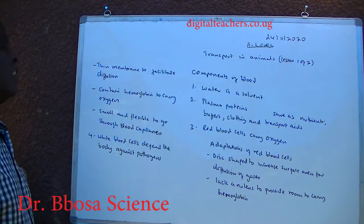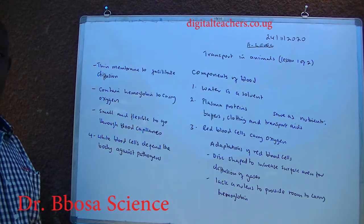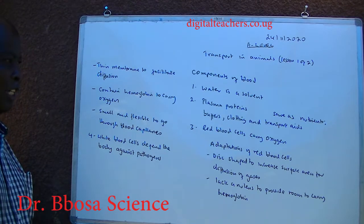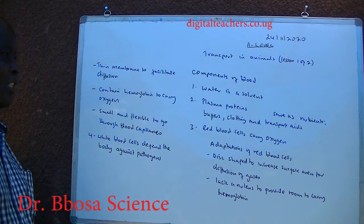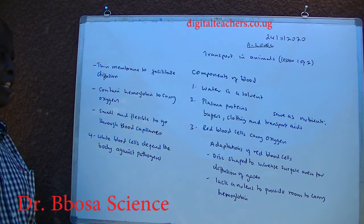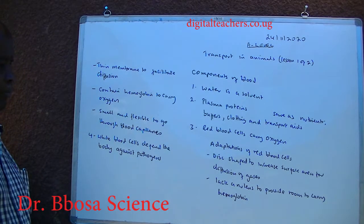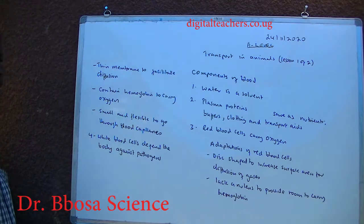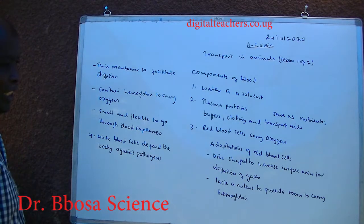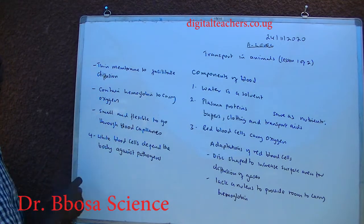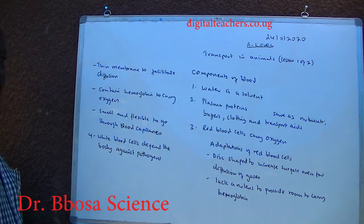Components of blood: 1. water is a solvent. 2. plasma proteins serve as nutrients, buffers for clotting and transport. 3. red blood cells carry oxygen. Adaptations of red blood cells: disc shape to increase surface area for diffusion of gases. Lack of a nucleus to provide room to carry hemoglobin. Thin membranes to facilitate diffusion.